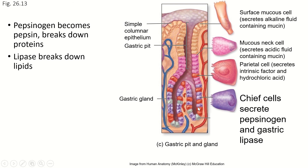Chief cells are down here. They secrete something called pepsinogen, which is a protein that gets activated and becomes pepsin. Pepsin breaks down proteins by breaking peptide bonds — that's where its name comes from. Chief cells also secrete gastric lipase, an enzyme that breaks down lipids. So chief cells secrete enzymes that break down both proteins and lipids.